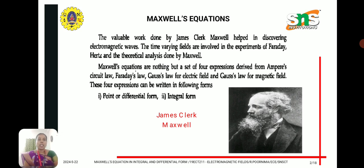Time varying fields are involved from the experiments of Faraday and Maxwell. Maxwell's equations are a set of four equations derived from Ampere's law, Faraday's law, Gauss's law for electric field, and Gauss's law for magnetic field. These equations are written in both integral and differential forms.